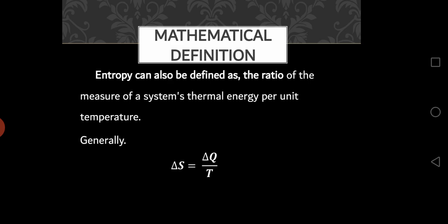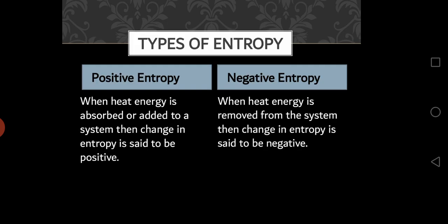Now we have two types of entropy. Number one is positive entropy and number second is negative entropy. So positive entropy is when heat is absorbed or added to a system, so its entropy will be increased. While on the other hand, when heat is removed or taken out of the system, then this sort of entropy will be considered as negative entropy.